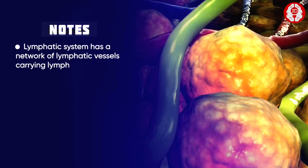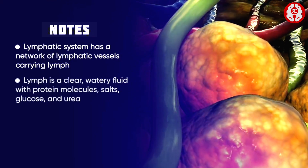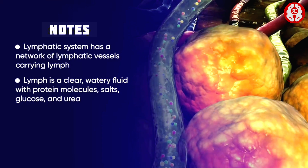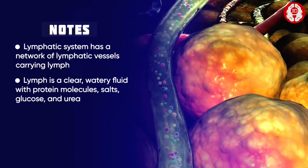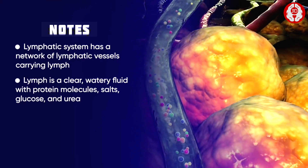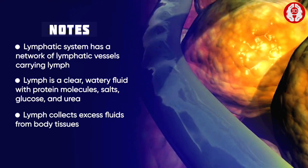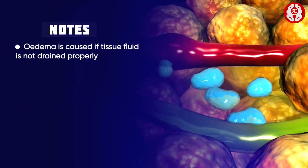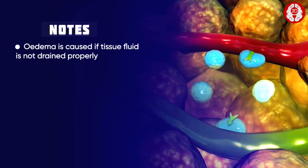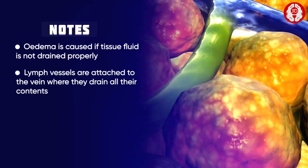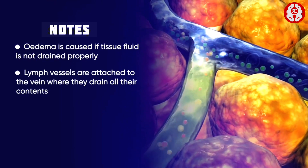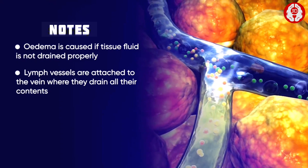In summary, the lymphatic system has a network of lymphatic vessels carrying lymph — a clear watery fluid with protein molecules, salts, glucose, and urea. The function of lymph is to collect water and proteins from body tissues. Edema, or swelling, is caused if tissue fluid is not drained properly. Lymph vessels are attached to the vein where they drain all their contents. The lymphatic system is important as it carries minerals, protein molecules, and glucose around your body.